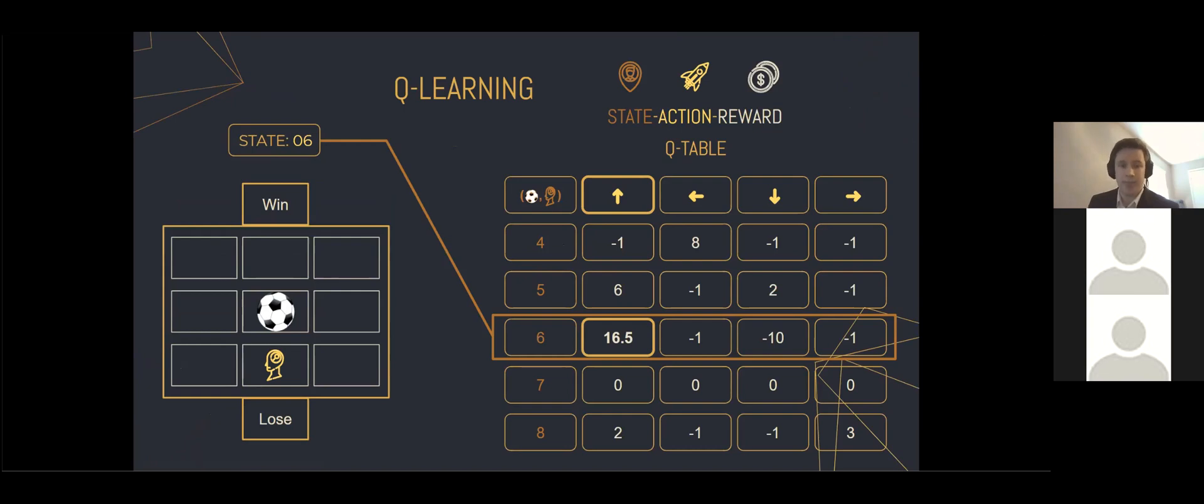I also used an epsilon greedy strategy, which basically means the agent will explore the environment and randomly choose actions in the beginning. Then, as the agent explores and becomes more confident in estimating which action it should take, the epsilon rate decreases, causing the agent to exploit the environment more frequently.